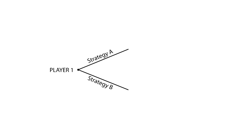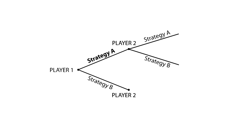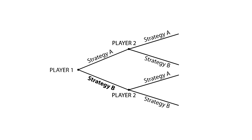In this example, since each player can choose from two different strategies, we have a branch for strategy A and another branch for strategy B. Now it's player 2's turn. Two new nodes are drawn to represent the point where a new decision has to be taken. It's important to understand that each player knows exactly at what node they are. If player 1 chooses strategy A, player 2 would have to choose between strategy A and B. If player 1 chooses strategy B, player 2 would again have to choose between strategy A and B.